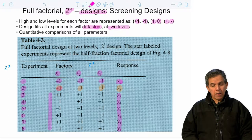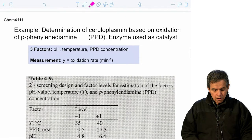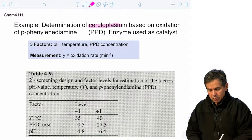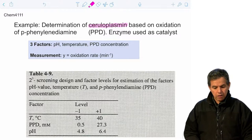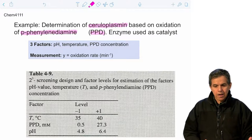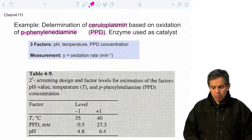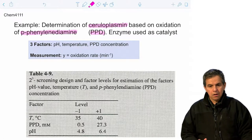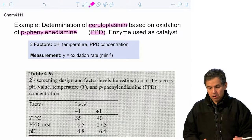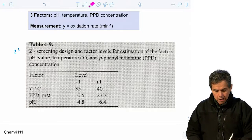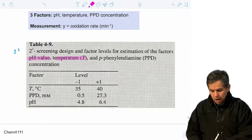Now let's see how this could be applied to a specific experiment. Here is a determination of a very important component in plasma, ceruloplasmin, based on a reporter chemical, paraphenylenediamine or PPD. The assay is based on monitoring the rate of oxidation. What we would like to understand is how different experimental parameters affect that rate of oxidation. This is a 2 to the third design because we are going to investigate the effect of three factors: pH, temperature, and the concentration of PPD.